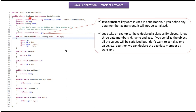Here you can see the Employee class. It has three data members: id, name, and age. Out of these three, I don't want to serialize the age data member. What I can do is declare age as transient. Then this age data member won't be serialized.